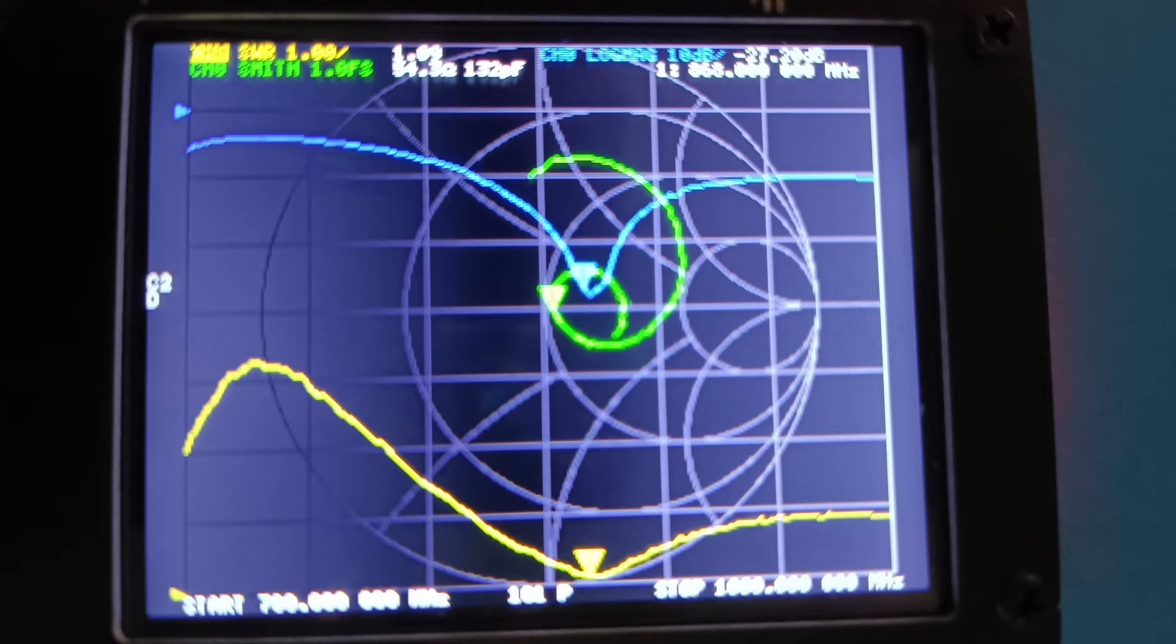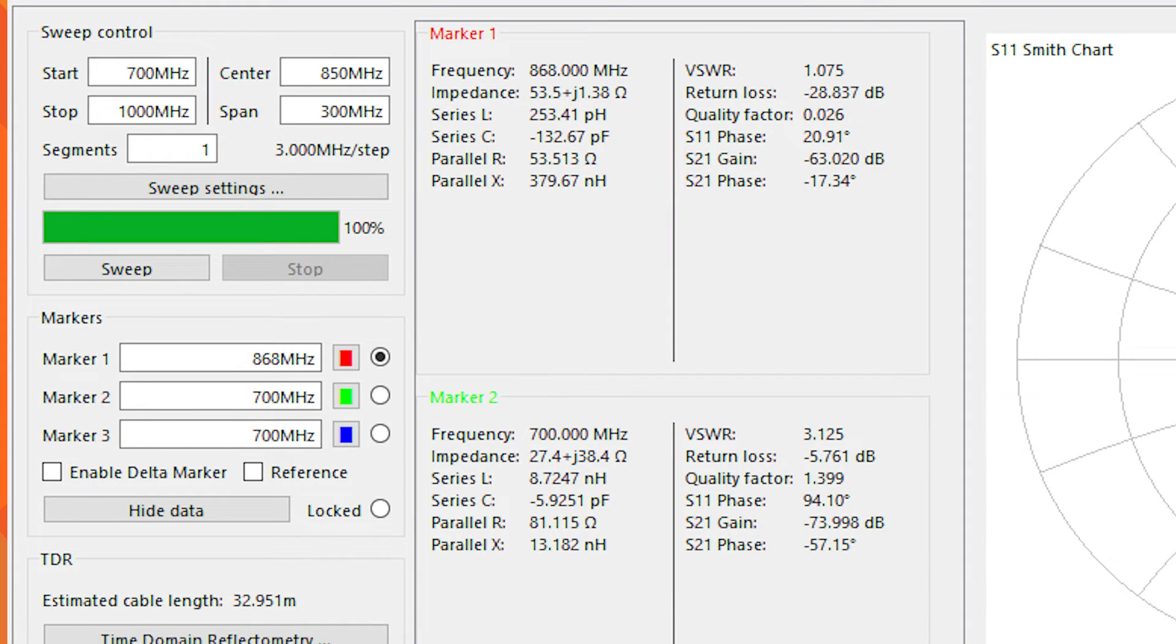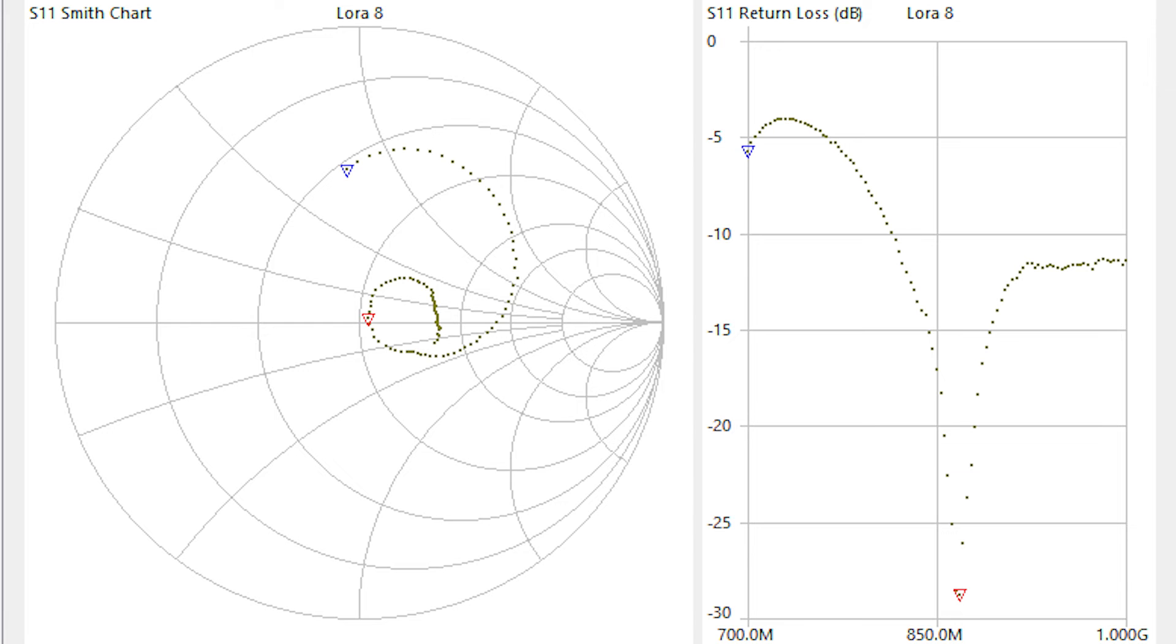We find the antenna tuned to 868 MHz with 1.09 SWR. On VNA server, we have good news. This is tuned to 868 MHz with a VSWR of 1.075 and return loss of minus 28 dB. So I am happy with it.